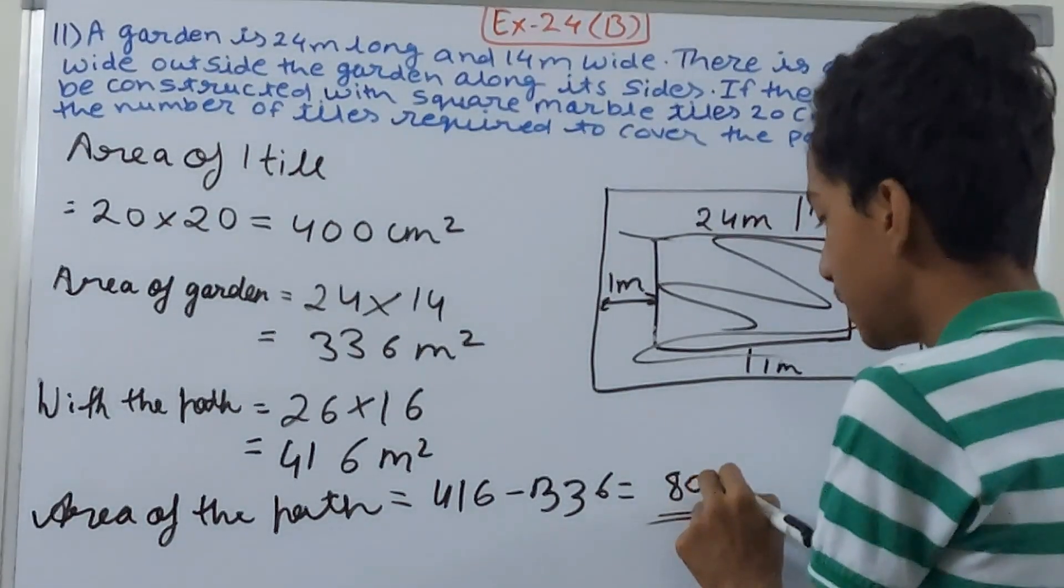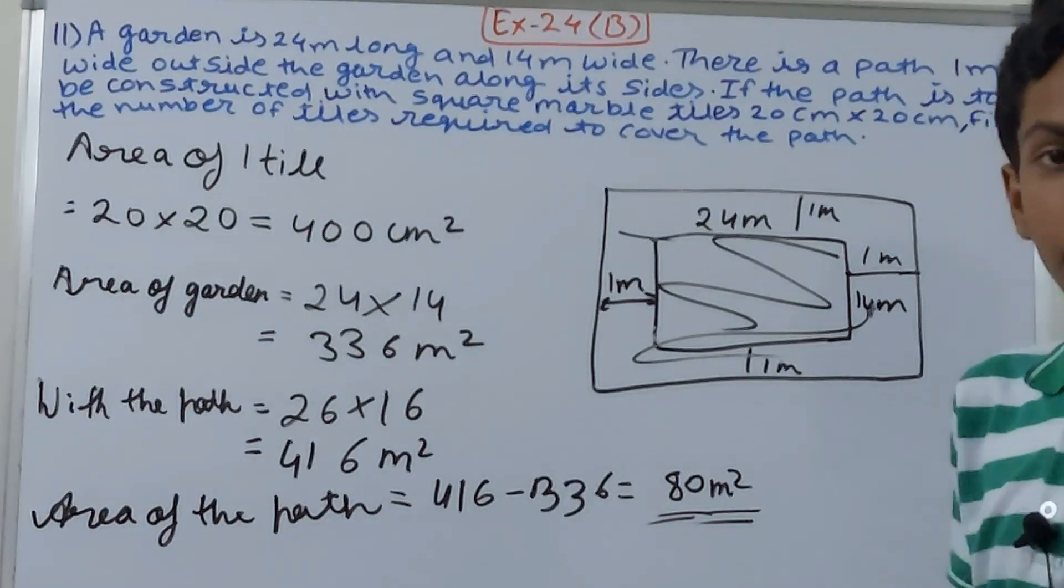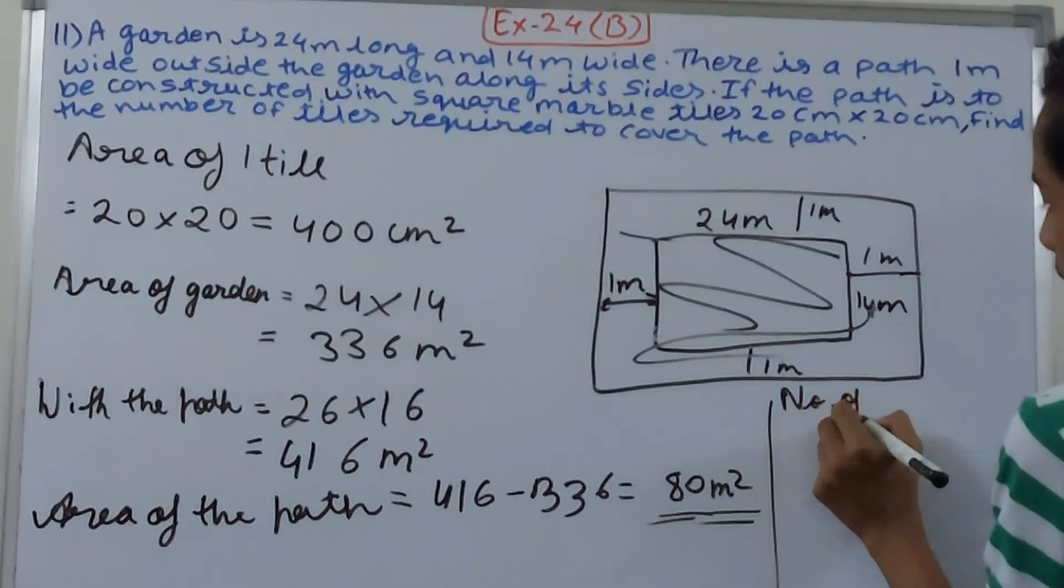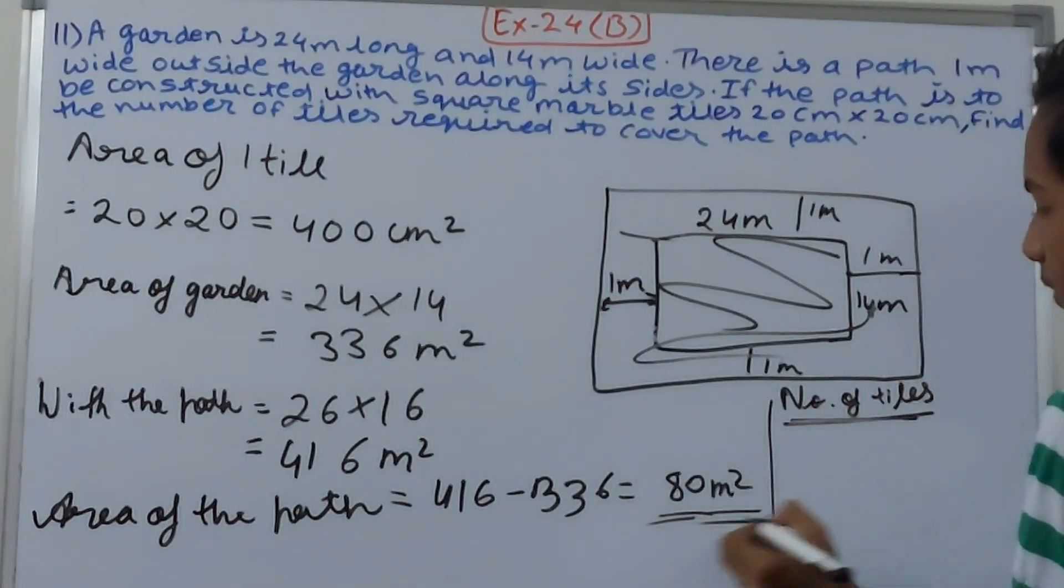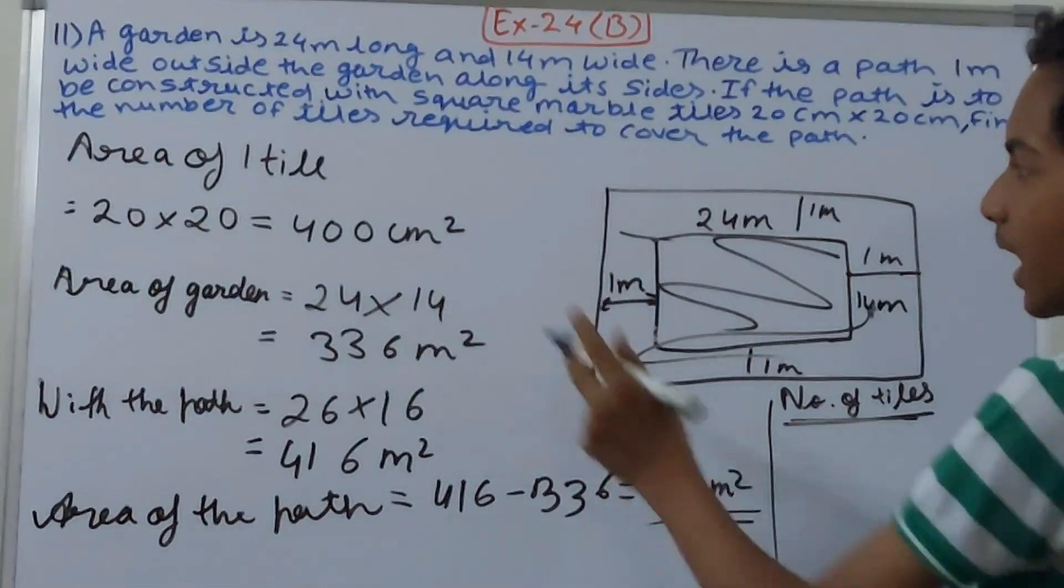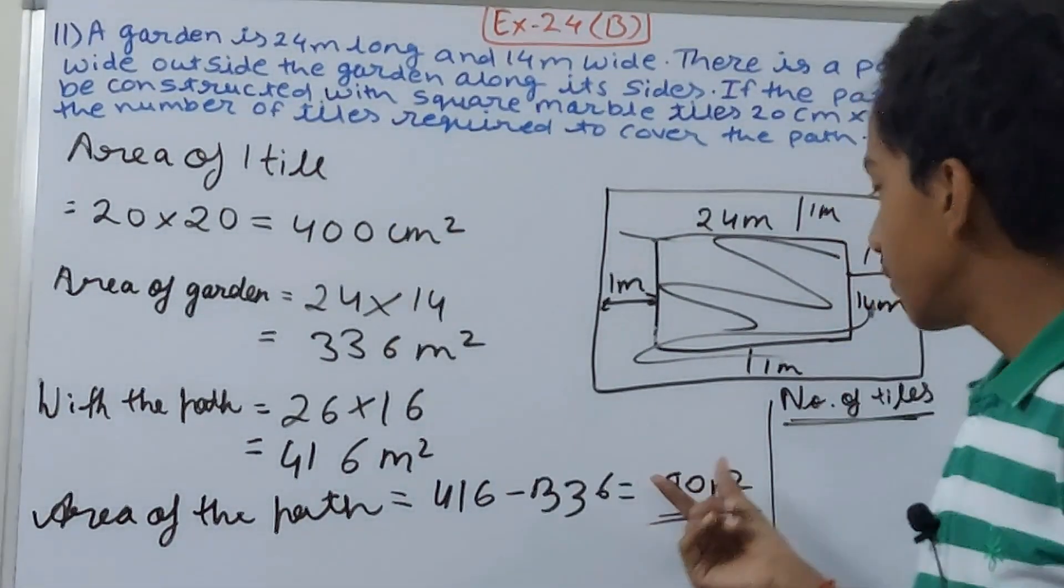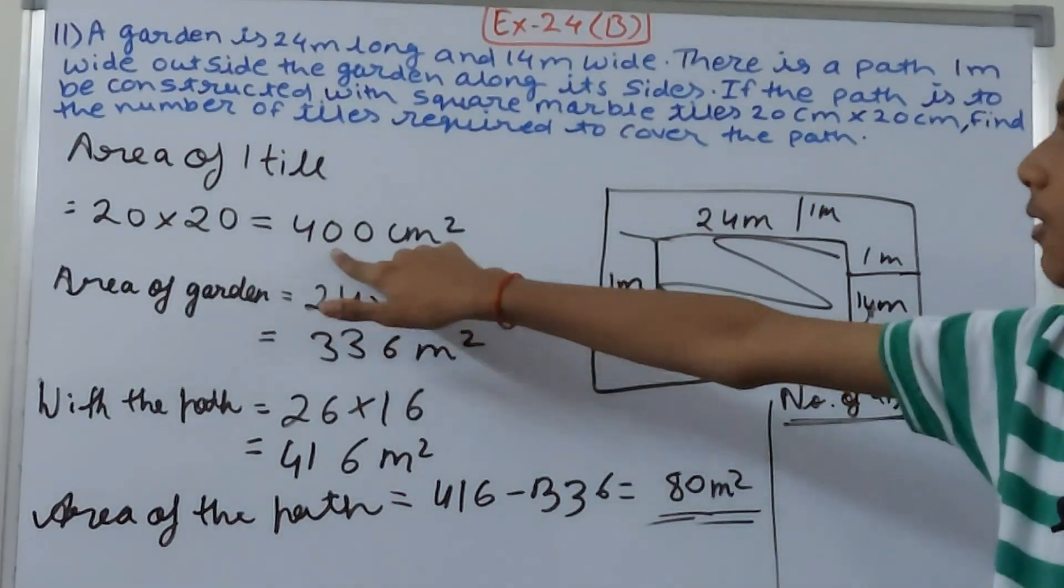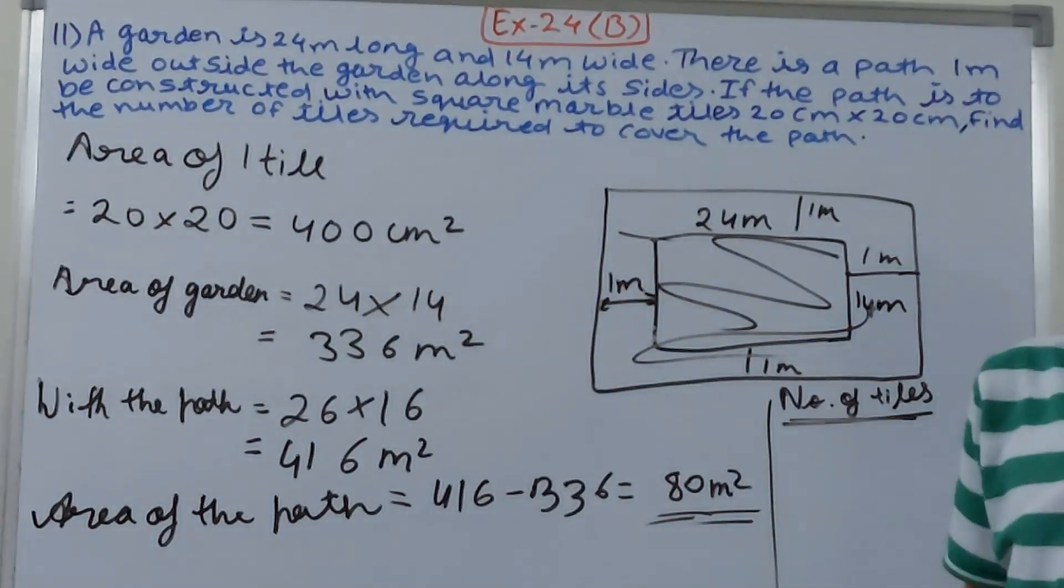Now number of tiles - number of tiles becomes 80 square meters and 400 square centimeters. We will convert 80 into square centimeters, and here 400 square centimeters will remain as it is.